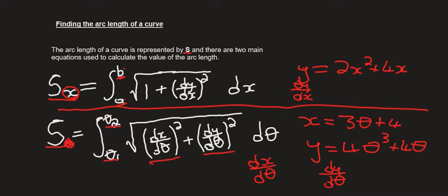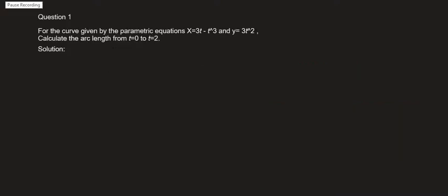Now, here is an example for each of these two equations. Question 1: For the curve given by the parametric equations x equals 3t minus t cubed, and y equals 3t squared, calculate the arc length from t equals 0 to t equals 2. So t equals 0 becomes our lower limit, and t equals 2 becomes our upper limit.